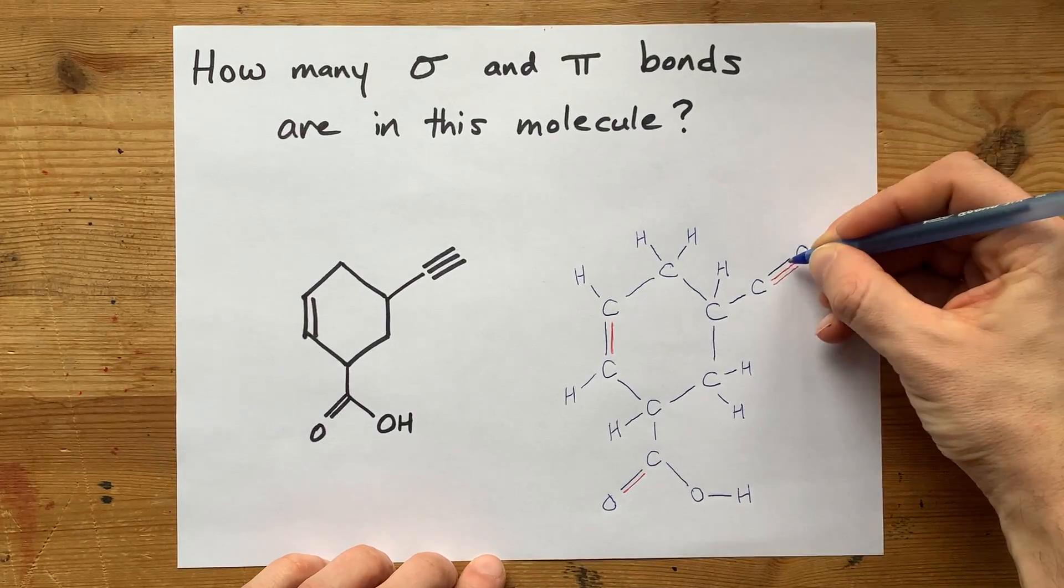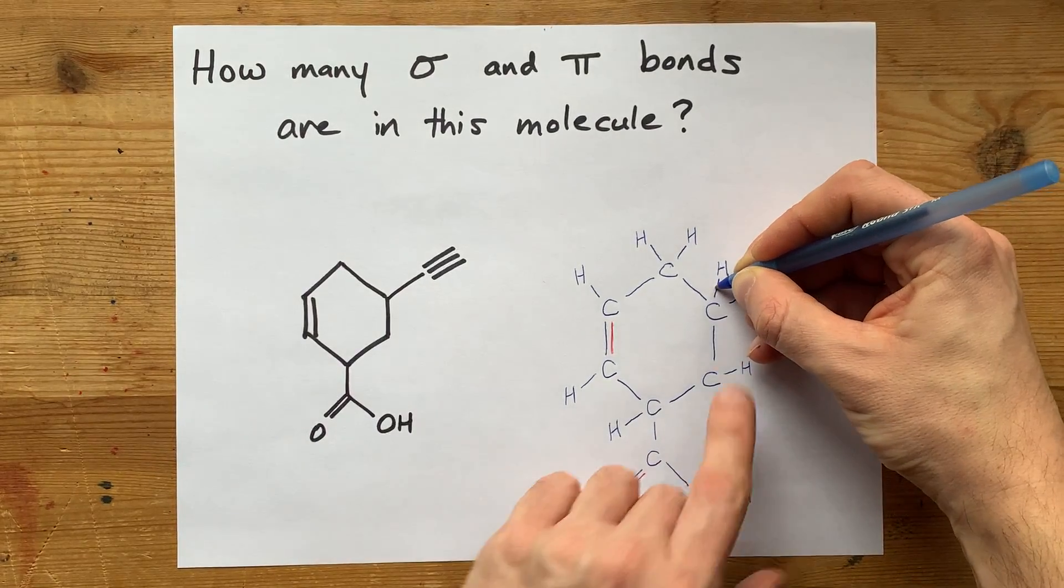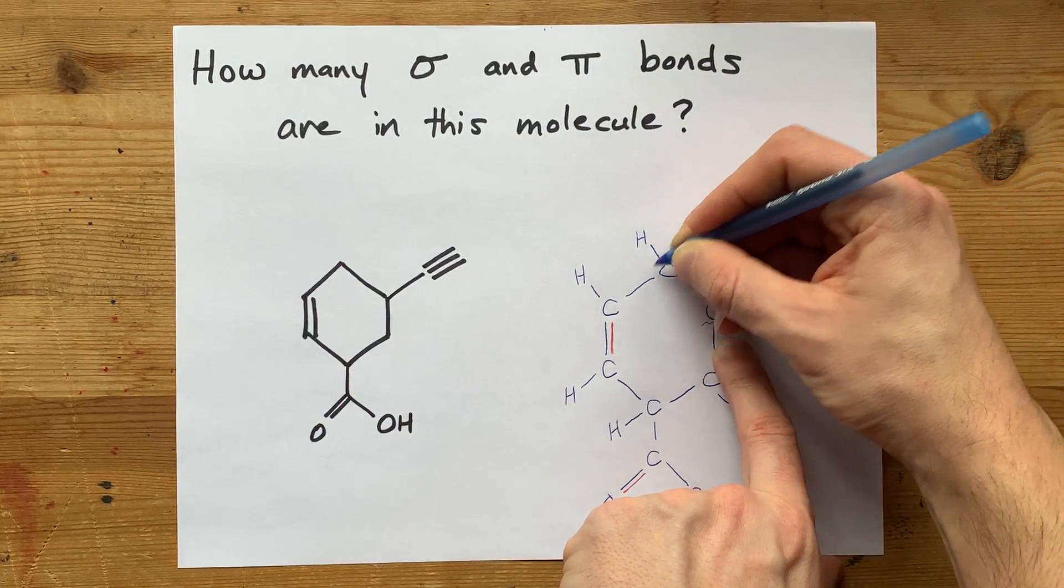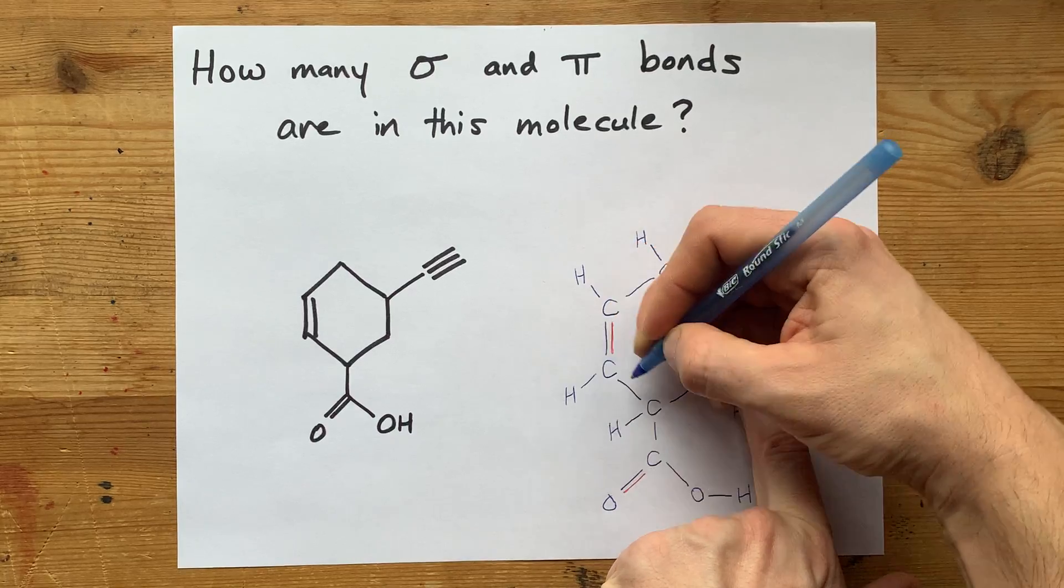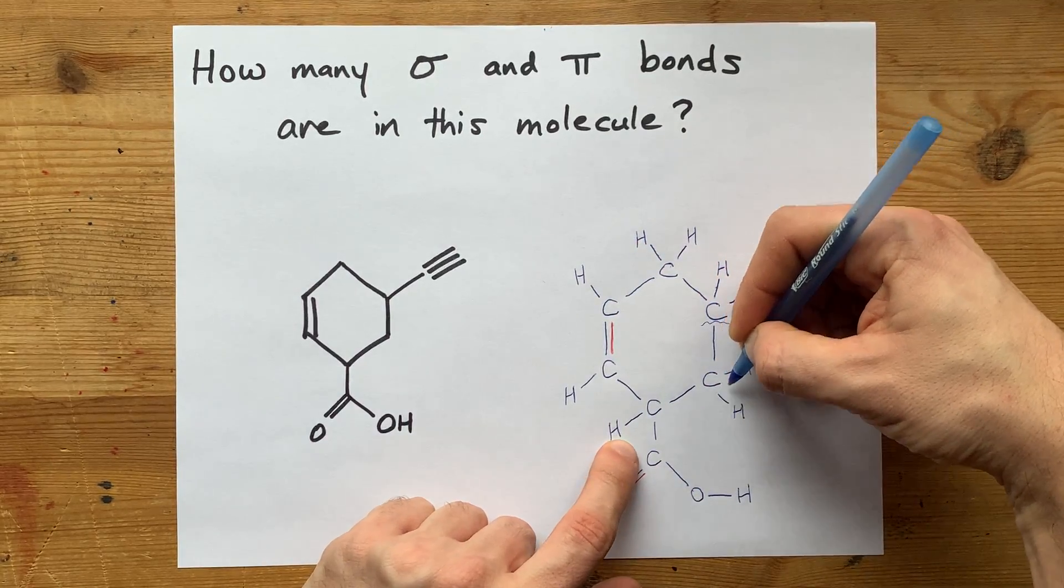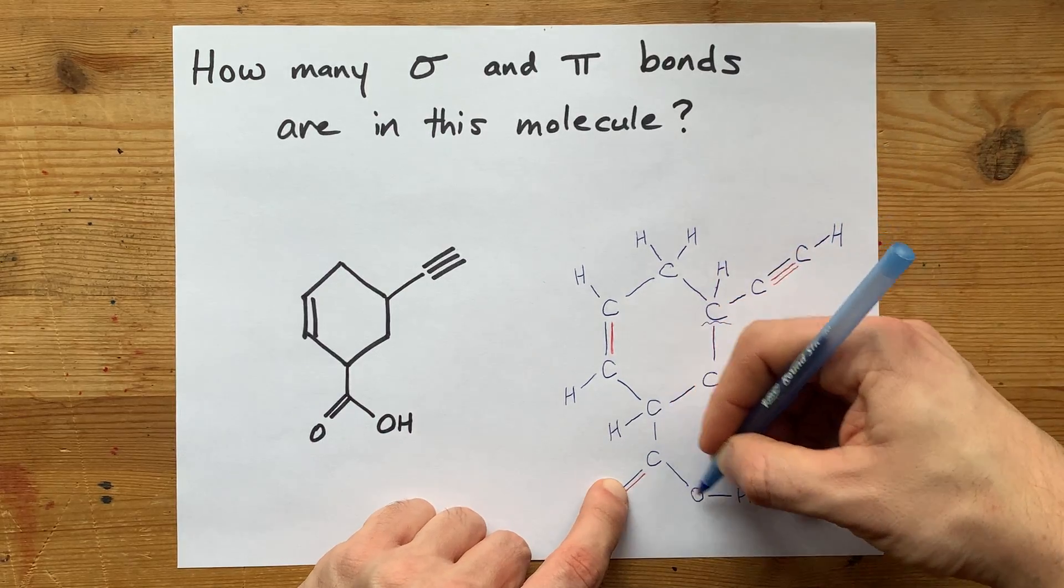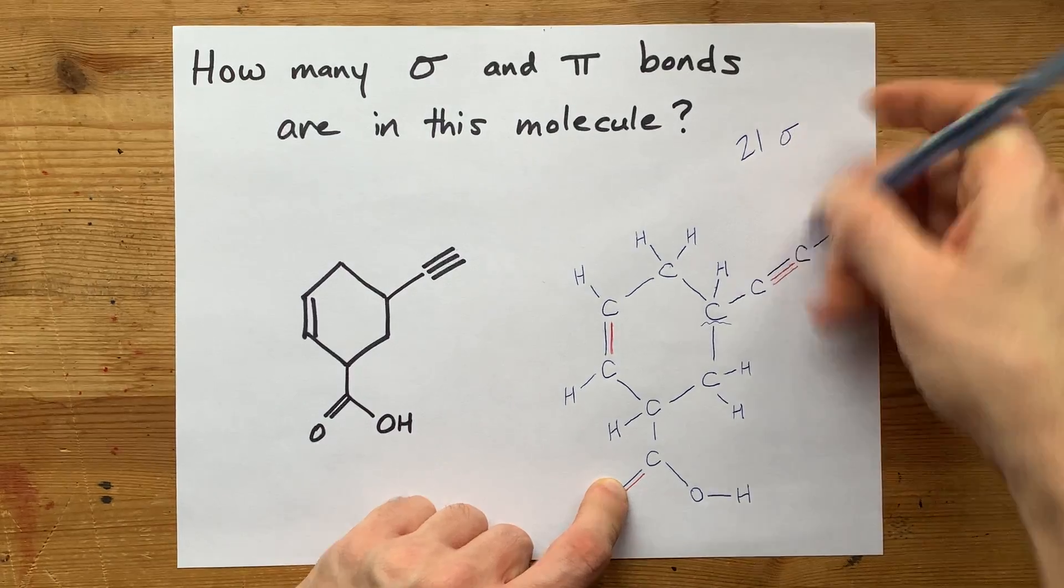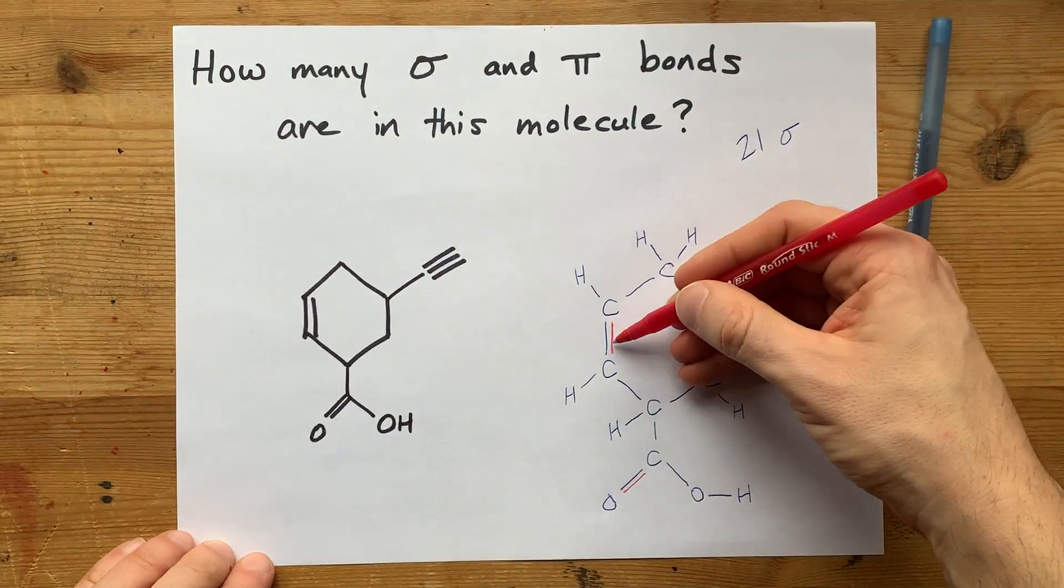I'm going to start here. One, two, three, four. I'm not going to include that yet. One, two, three, four, five, six, seven, eight, nine, ten, eleven, twelve, thirteen, fourteen, fifteen, sixteen, seventeen, eighteen, nineteen, twenty, twenty-one. I believe I count twenty-one sigma bonds here, and as we discussed before,